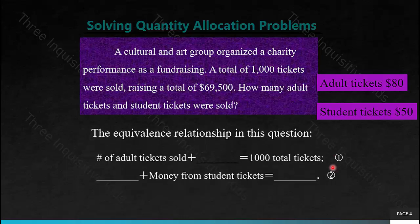What is the equivalent relationship in this question? We have two. The first one is: the number of adult tickets sold plus the number of student tickets sold is equal to 1,000 total tickets. The second one is: the money from the adult tickets plus the money from the student tickets is equal to $69,500.